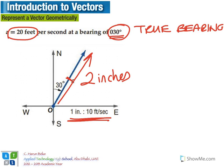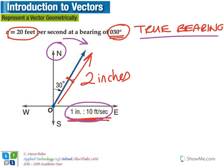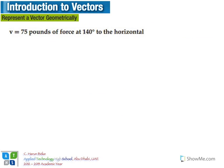So for a true bearing, you measure the given angle from due north in the clockwise direction and draw your arrow accordingly. Then you define your scale and draw the magnitude according to that scale — in this case 2 inches. The second way to represent a vector is: v equals 75 pounds of force at 140 degrees to the horizontal.